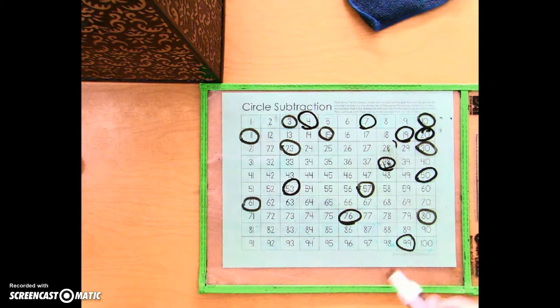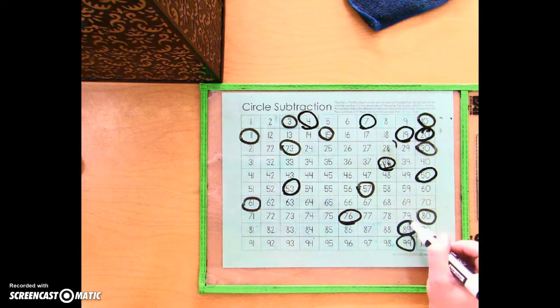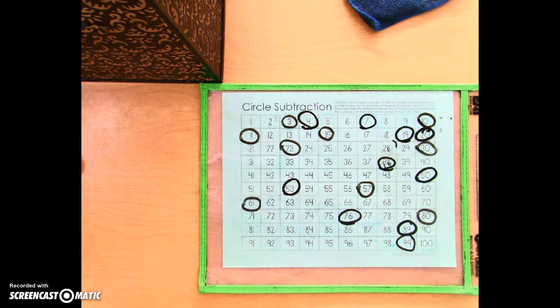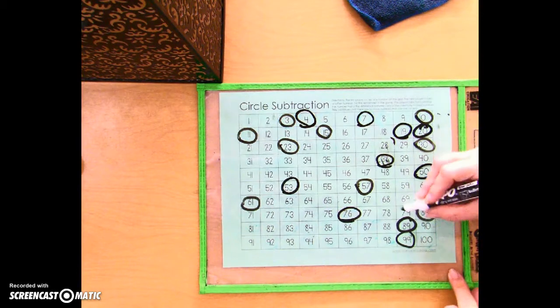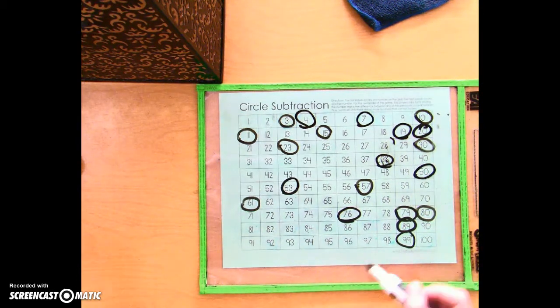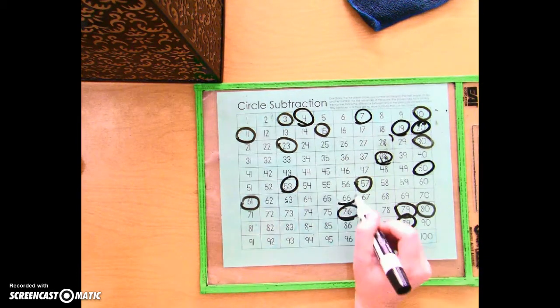Oh boy. 99 minus 10 is 89. 89 minus 10 is 79, and 76 minus 10 is 66.